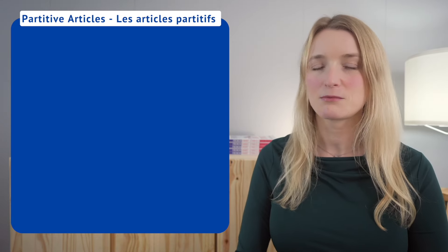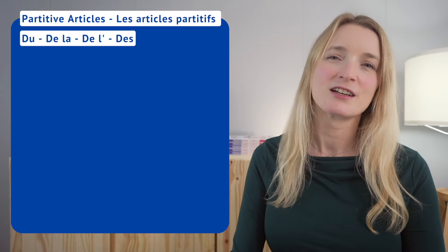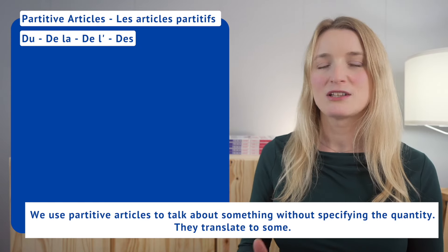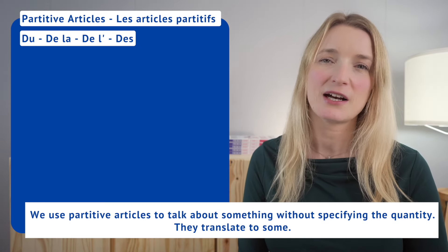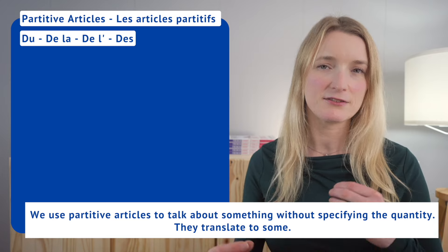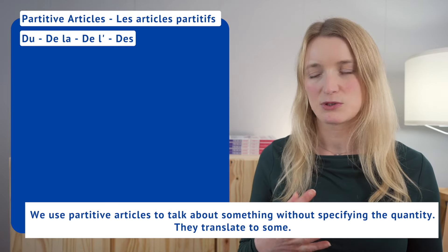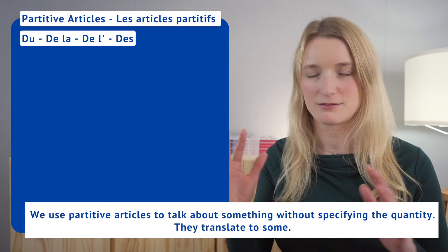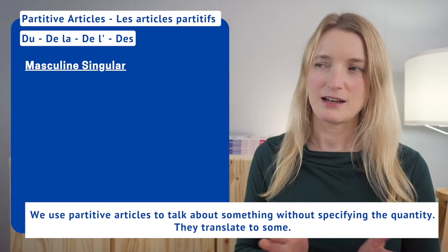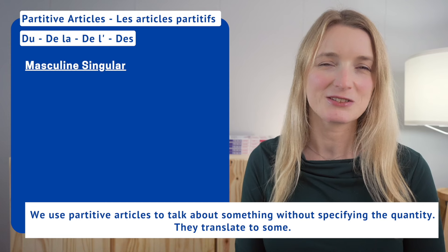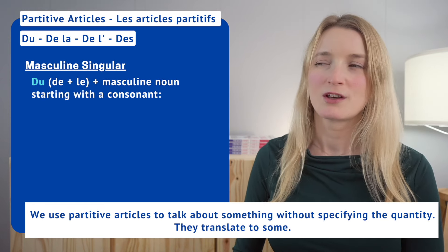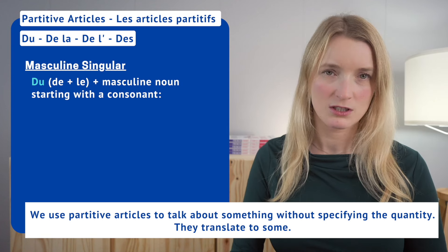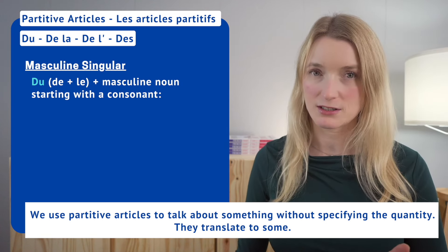We have one more type to see — partitive articles, les articles partitifs: du, de la, de l'apostrophe, and des. We use partitive articles to talk about something without specifying the quantity. They translate to 'some,' even though sometimes in English you just don't use 'some.' Let's start with masculine singular: du, which is technically 'de' plus 'le,' used before a masculine noun starting with a consonant.